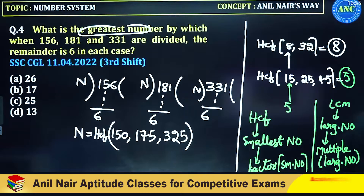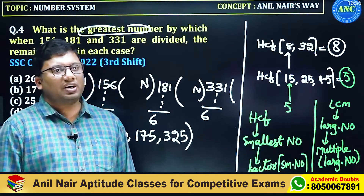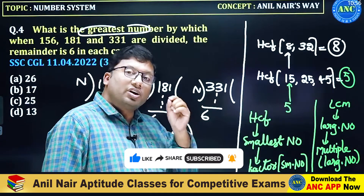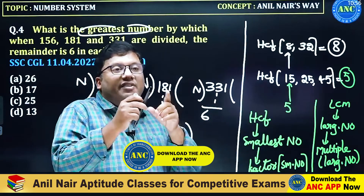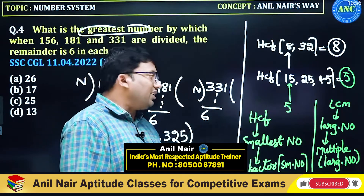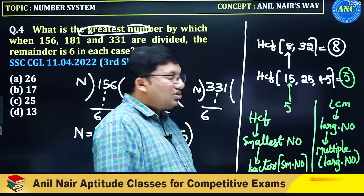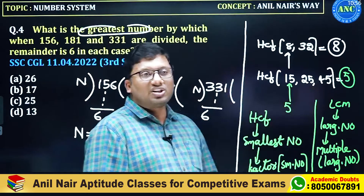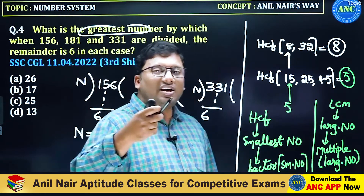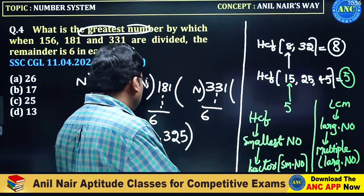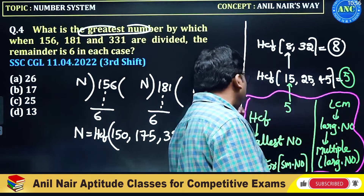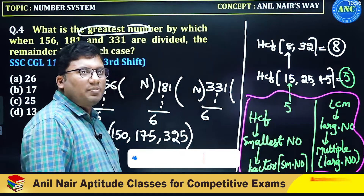Simple definition: HCF means you concentrate on the smallest number. The smallest number should divide every other number. If it is dividing every number, the smallest number is the HCF. If not, go to the factor of the smallest number. For LCM, check the largest number. If the largest number is a multiple of every other number, it is the answer. If not, take a multiple of the largest number. Please make a note of this. All exam questions are conceptual — you should be very good in concepts.